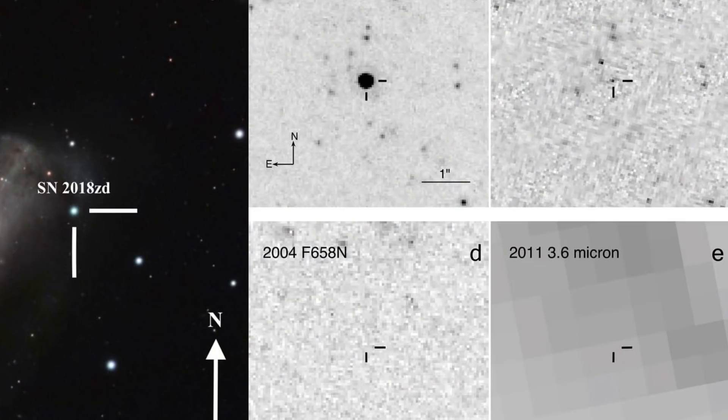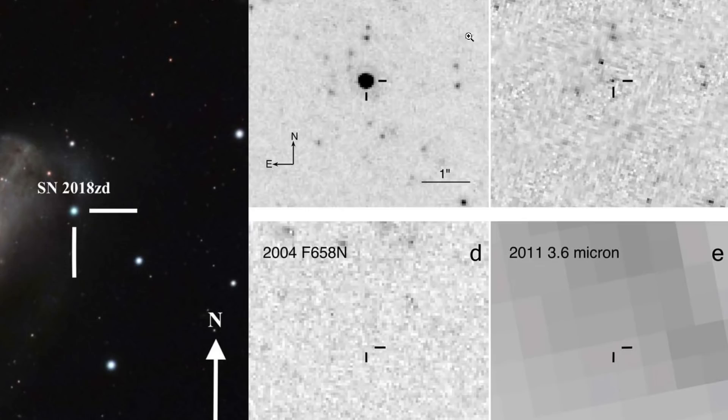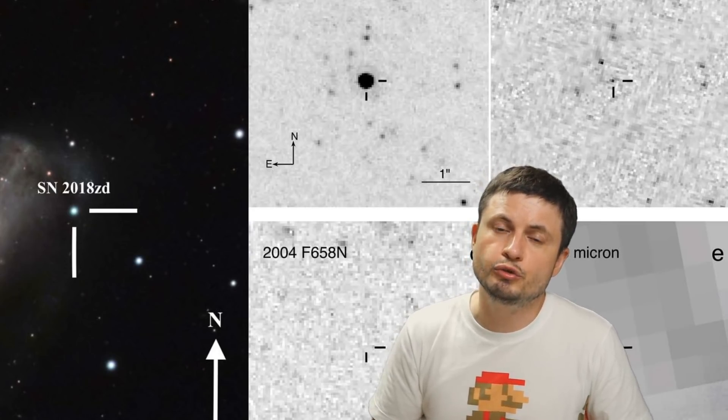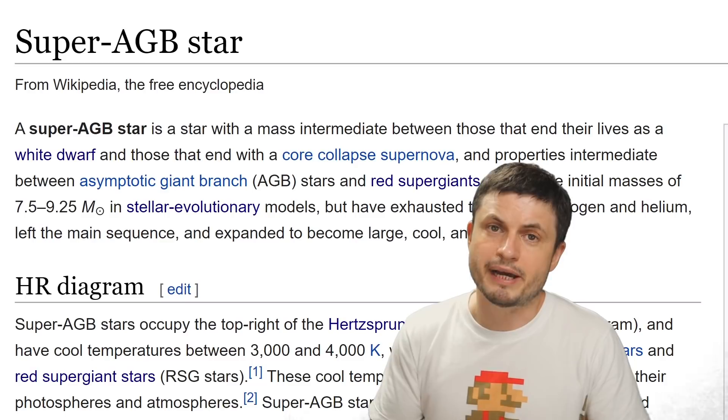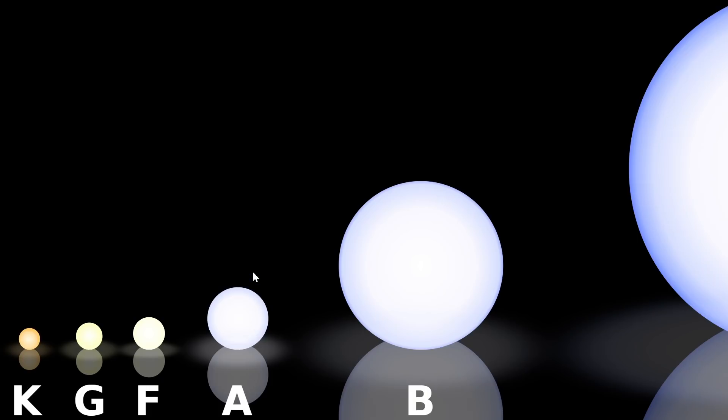What do we know about this particular supernova right now? First of all this is at a distance of about 30 to 40 million light years away from us. Because it was detected relatively recently, the scientists were able to use several telescopes including Hubble and Spitzer telescopes to discover the original progenitor star. It's this tiny pixel right here, the pixel that turned out to be what's known as the super AGB star, also known as the super asymptomatic giant branch star which happens to fit perfectly in that mass gap I previously discussed.